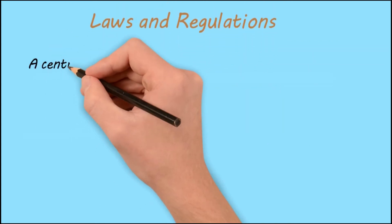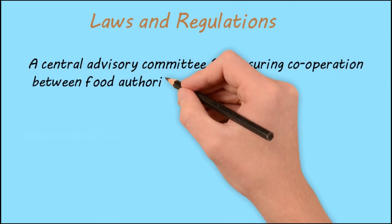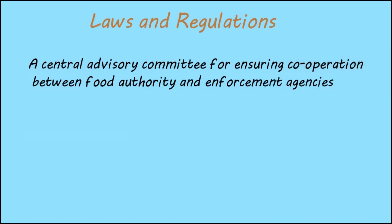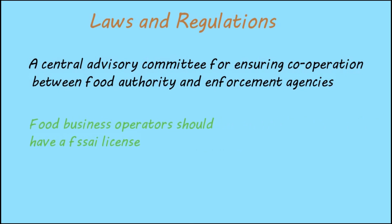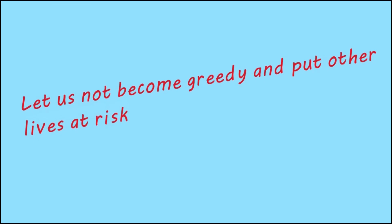Let us see some laws. A central advisory committee is formed for ensuring cooperation between the food authority and enforcement agency. The agency sees to it that no activity of adulteration takes place. Operators' licensing will also work. FSSAI takes care of all these issues. Surveys should be carried out. Let us not become greedy and put other lives at risk. Please report to consumer forums or FSSAI if you find any adulteration taking place.